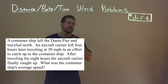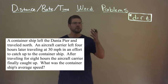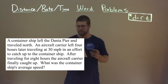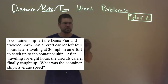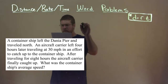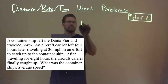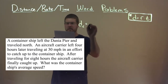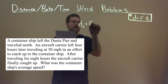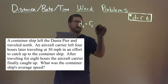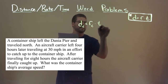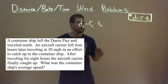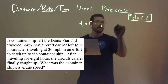So we need to break down two distance, rate, time problems here. So the container ship — we'll call it the distance of the container ship — equals the rate of the container ship times the time of the container ship. We're going to do the same thing with the aircraft carrier.